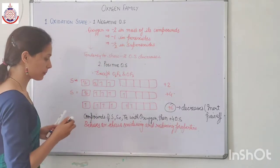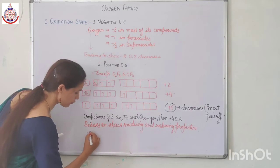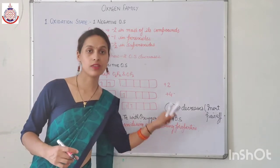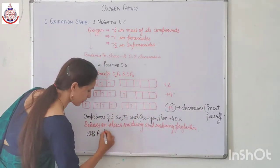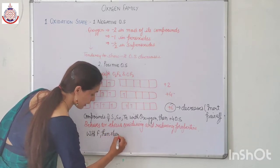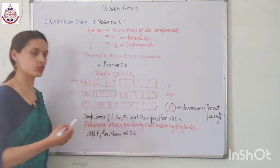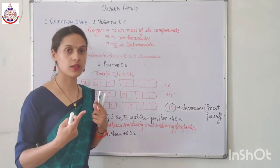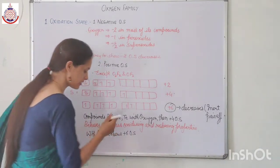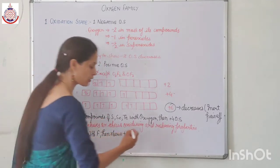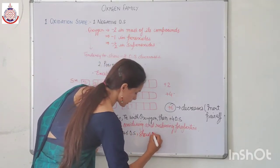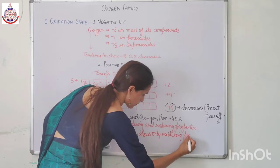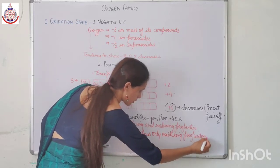And if we have compounds of sulfur, selenium, and tellurium with fluorine — like SF6 — then these elements show plus six oxidation state. In SF6 the oxidation state of sulfur is plus six. In that case the compounds show only oxidizing properties.